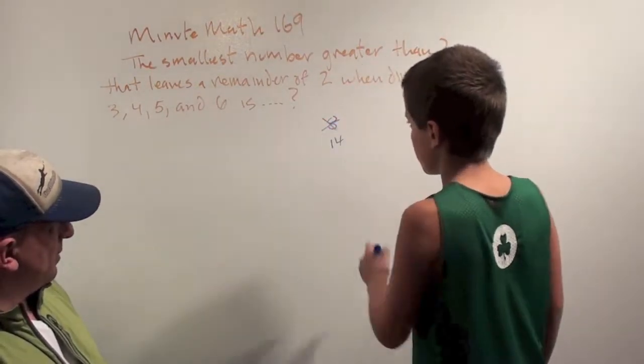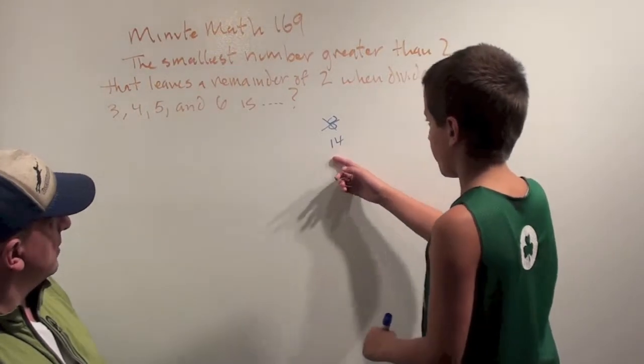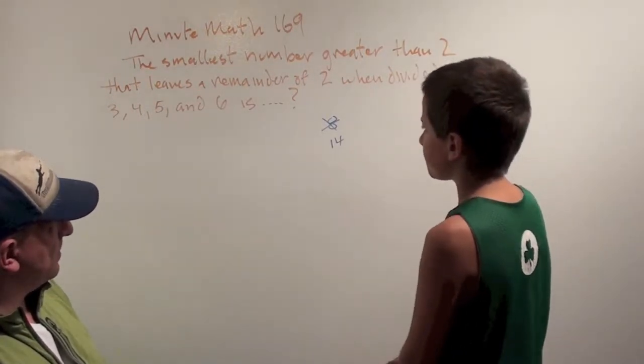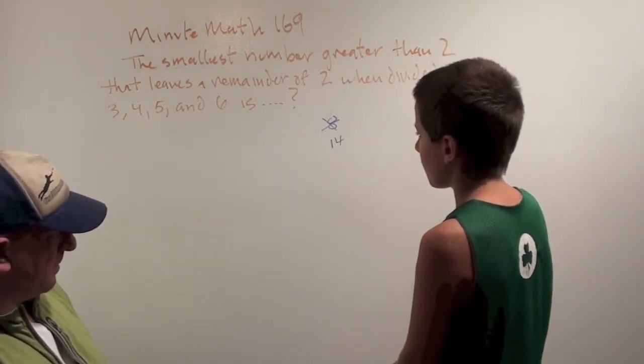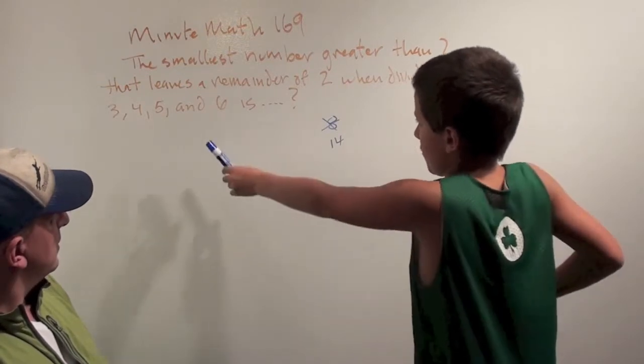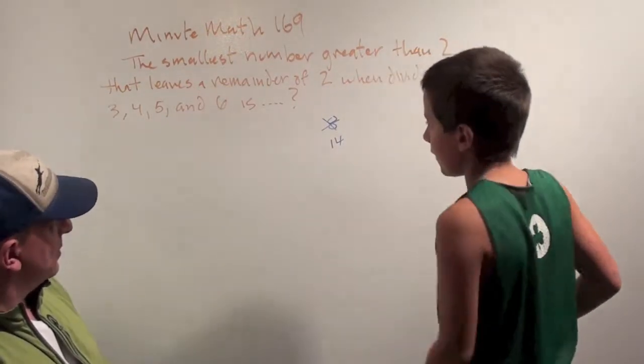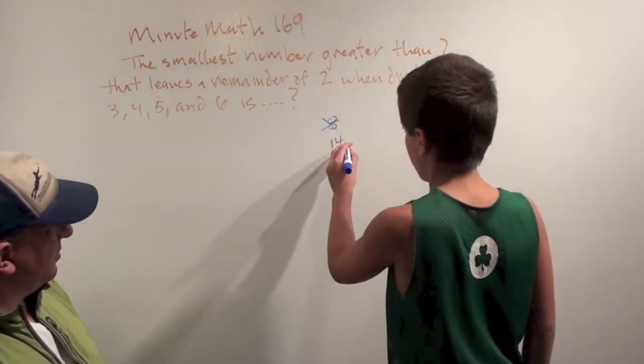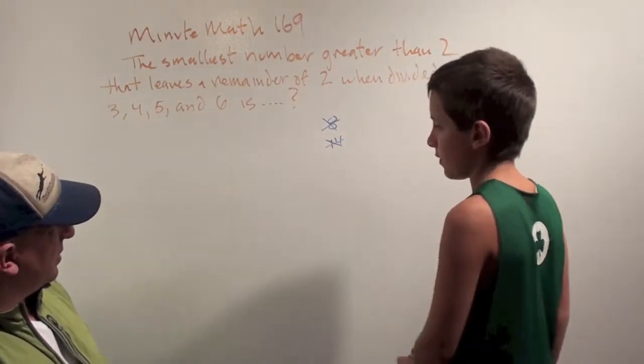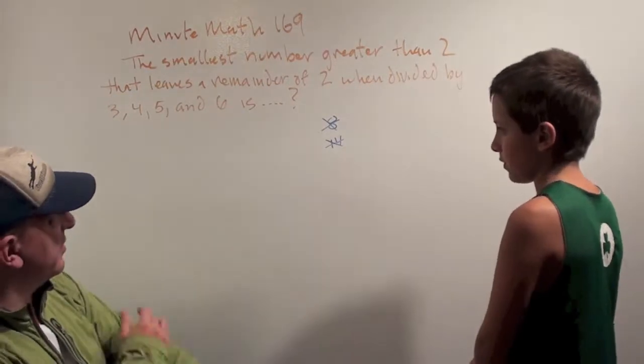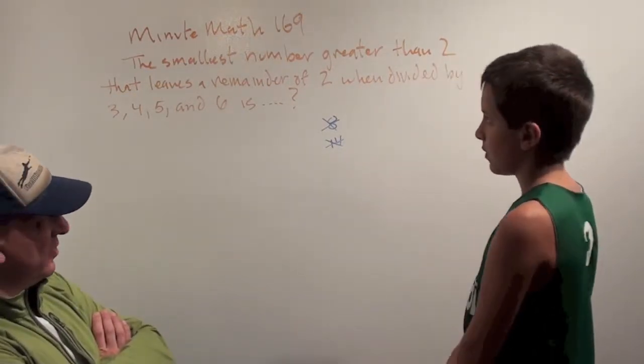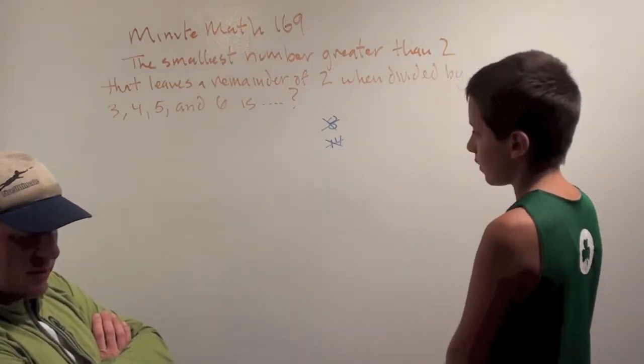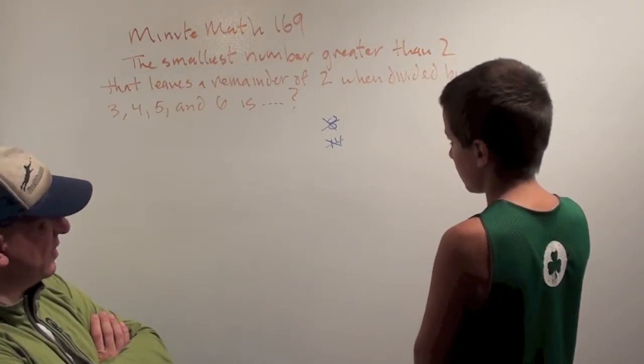Alright. Let's try 14. Well, the only problem is it doesn't leave a remainder of 2 when we divide it by 5. Okay, that's good. Alright, so we've eliminated 8 and 14. Now, you definitely could just keep going and find the smallest one just using multiples of 6. Is there any way you think you could speed this process up?